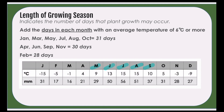For each of those months, you want to look at how many days are in that month. So for May there's 31, June there's 30, July 31, August 31, and September 30. We're going to be adding these up to get the length of our growing season. So the length of our growing season for this location is 153 days.